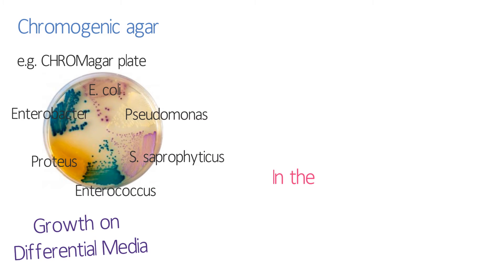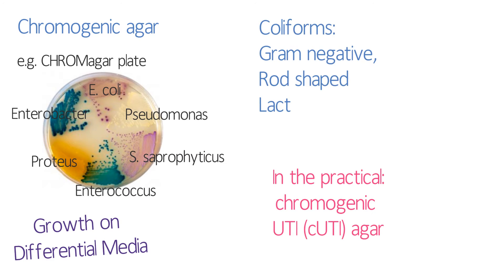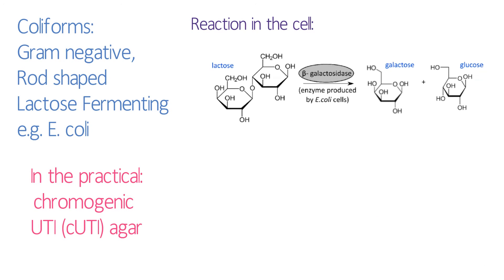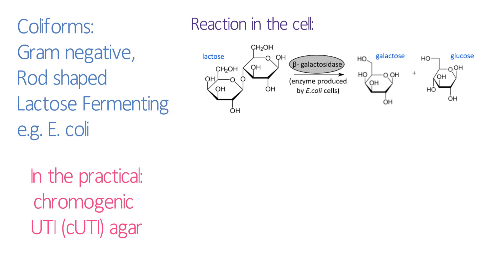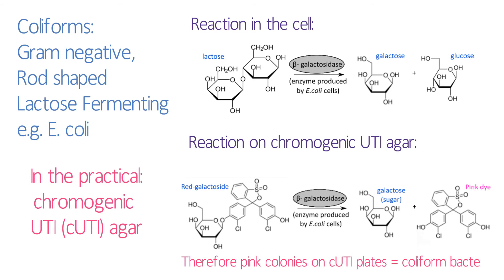You can also use chromogenic agar to help identify species. Chromogenic agars contain dyes that change colour in the presence of particular bacterial species. In the practical we're going to use chromogenic UTI agar to identify coliform bacteria. Coliforms are rod-shaped bacteria that can ferment lactose, for which they need the enzyme beta-galactosidase, which cleaves lactose into glucose and galactose. This beta-galactosidase enzyme can also cleave a synthetic dye called red galactoside, which releases a pink-coloured molecule. Therefore, if we plate bacteria onto CUTI plates, we can identify coliforms easily because the colour of the colony will change.